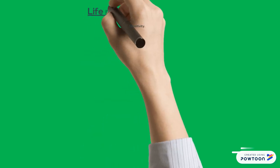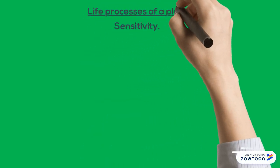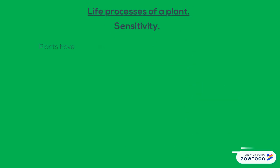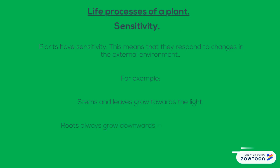After reproduction and nutrition, we are going to talk about sensitivity. Plants have sensitivity. This means that they respond to changes in the external environment. For example, stems and leaves grow towards the light, and roots always grow downwards in search of moisture.